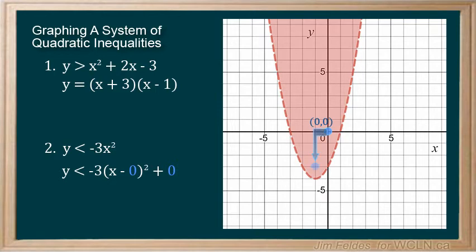giving us the points negative 1, negative 3, and 1 and negative 3, and this parabola.